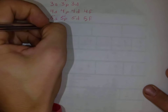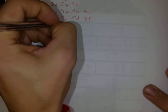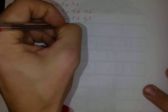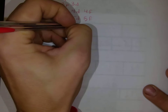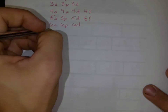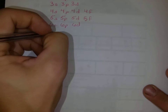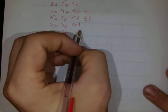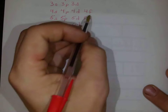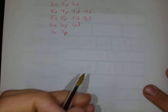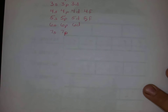Our 6s, 6p, 6d, and then our 7s and our 7p. All of these other ones that would be over here, we haven't observed them yet, so we're not going to put them on there for now.